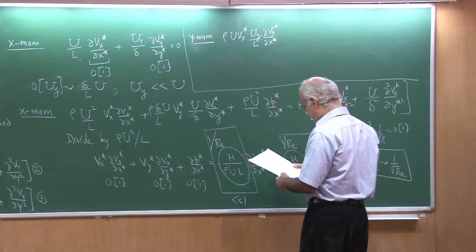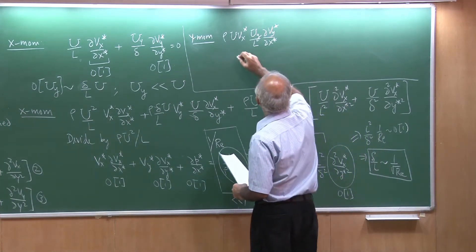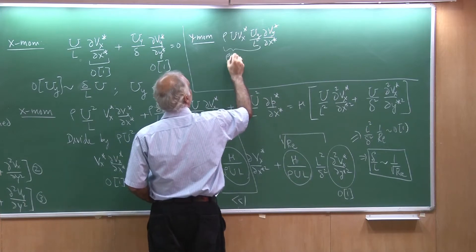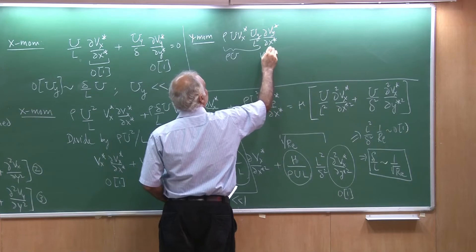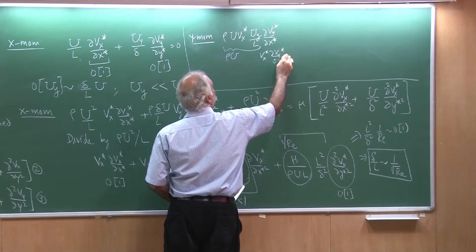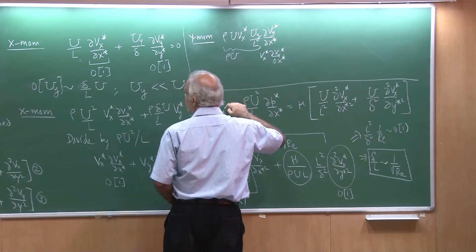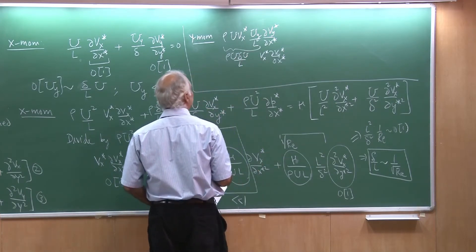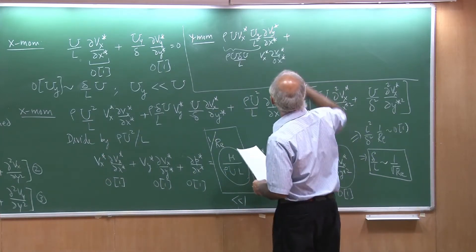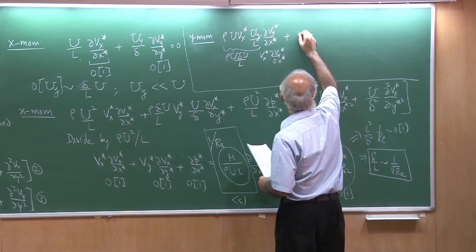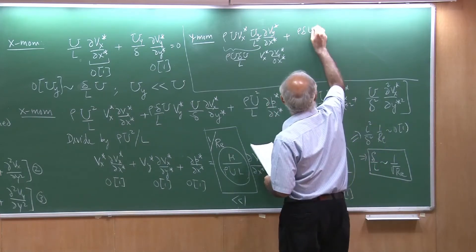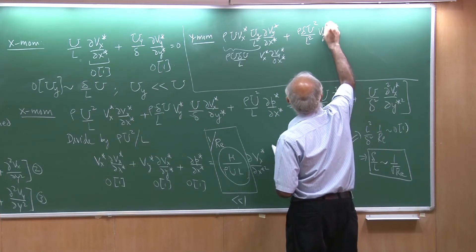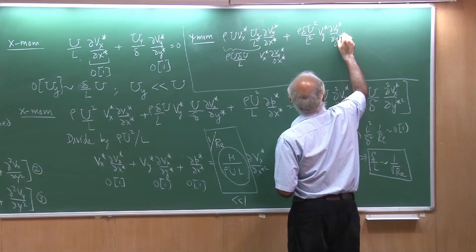That is the first term. Let me simplify this right away. This would become rho u, and here I would get Vx star del Vy star by del x star. I will substitute for Uy; Uy is given as delta times u by L. That gives the first term, and then the next term would be plus rho delta u squared by L times del Vy star by del y star.